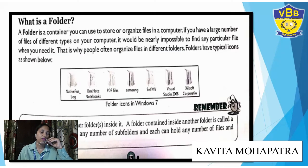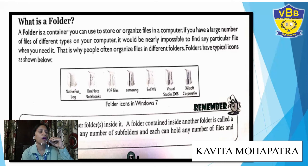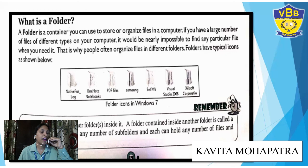These are the file name extensions. Folder — you keep your things in a folder because if you create lots of files it is very difficult to identify them. So you will make a folder in your name and keep all the files inside it. A folder is a container you use to store or organize files in a computer. If you have a large number of files of different types it would be really impossible to find any particular file. That is why people often organize files in different folders. A folder can also store other folders inside it — a folder contained inside another folder is called a subfolder. You can create any number of subfolders, each holding files and additional subfolders.